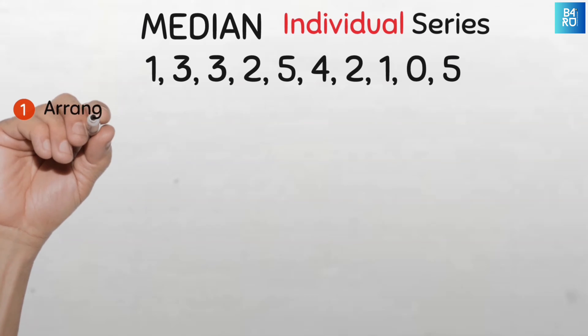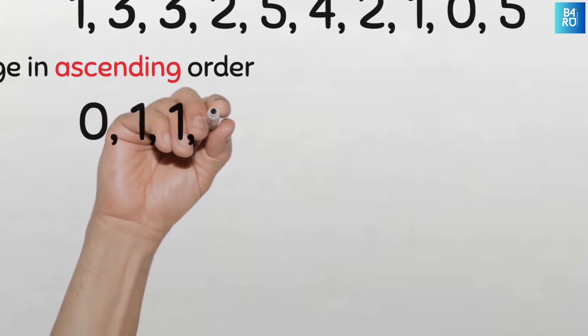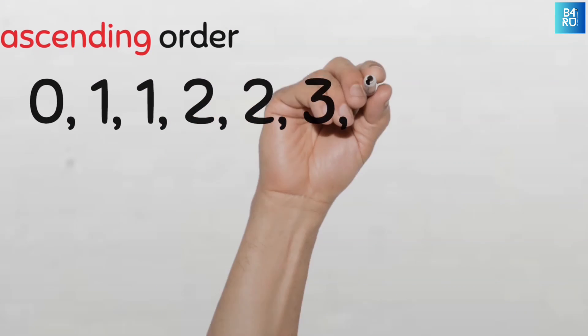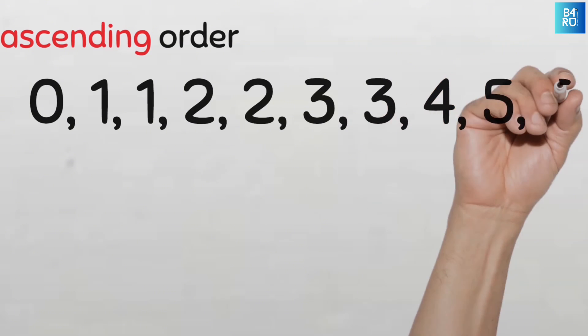To do this we need to first arrange the data in ascending or descending order. I prefer the ascending order because it's just logical. So here we'll have 0, 1, 1, 2, 2, 3, 3, 4, 5, and 5. That's 1, 2, 3, 4, 5, 6, 7, 8, 9, and 10.